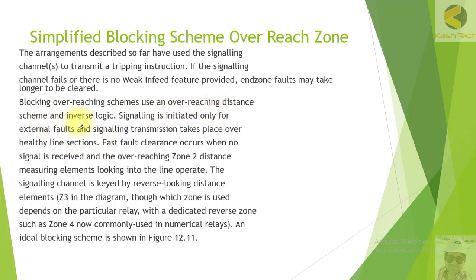The blocking overreaching scheme uses an overreaching distance scheme with inverse logic — signaling is initiated only for external faults, and signaling transmission takes place accordingly. For healthy line sections, fast fault clearance occurs when no signal is received and the overreaching zone 2 distance measuring elements looking into the line operate. The signaling channel is keyed by a reverse-looking distance element, typically zone 3, depending on the particular relay.